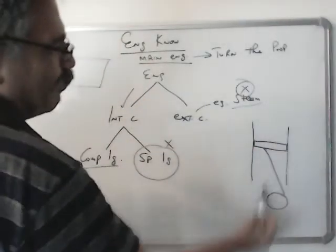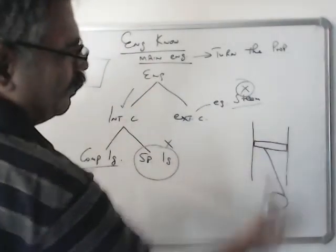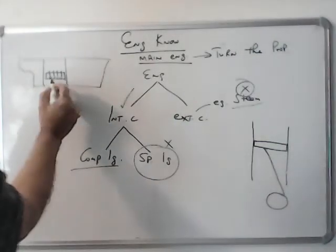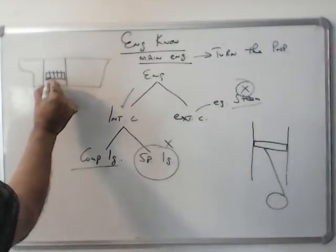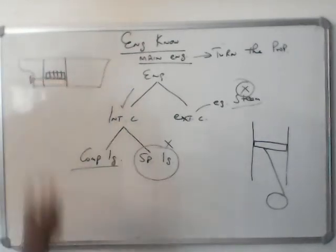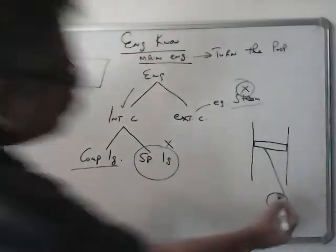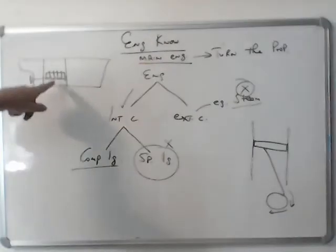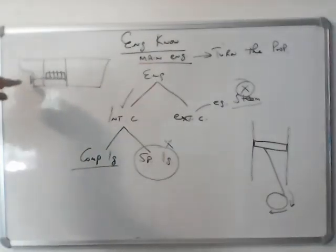The piston moves up and down and the up and down motion is converted into rotary motion. And this crankshaft is then connected by the propeller shaft to the propeller. Crankshaft rotates, this rotary motion is transferred to the propeller shaft and then to the propeller.